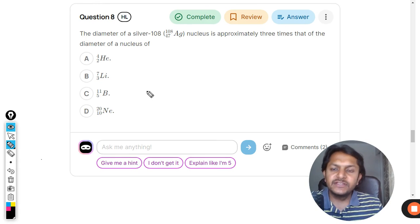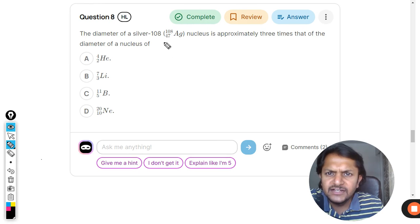Okay, dear student, let's see what is there in this question. The diameter of the silver nucleus is approximately three times that of the diameter of which nucleus.